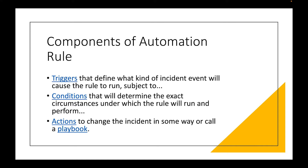When talking about automation rules, what makes one up? First are triggers — these define exactly what event will cause the automation rule to fire. Second are conditions — essentially if/then statements: if this happens, then do this. Third are actions — the change that occurs in the incident. So the trigger fires, the conditions are evaluated, and then the actions follow.